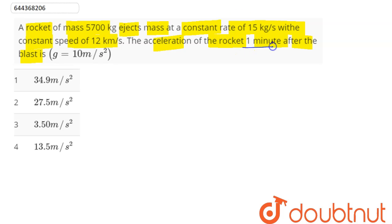So here we can say, suppose this rocket is ejecting mass at a constant rate. Here dm by dt value is given as 15 kg per second. After 1 minute, initial mass was 5700 kg, that is after 60 seconds the remaining mass of this rocket will be